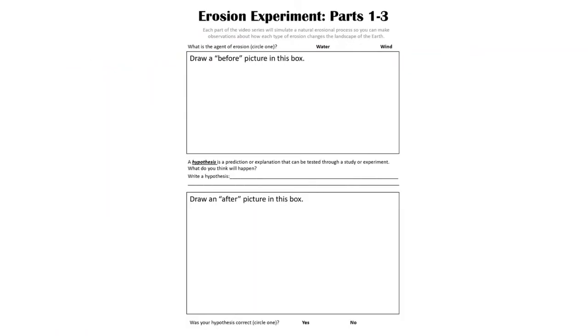Before we get started, let's take a moment to go over the worksheet. We're going to be using the same worksheet for the first three videos in the series. The first thing we're going to do on the worksheet is identify the agent of erosion. In other words, what is causing the erosion? Is it water or is it wind? And we're going to circle our answer.